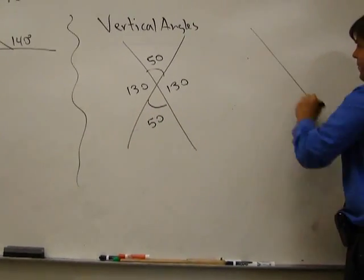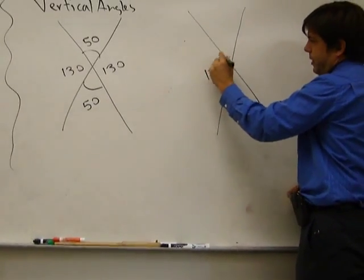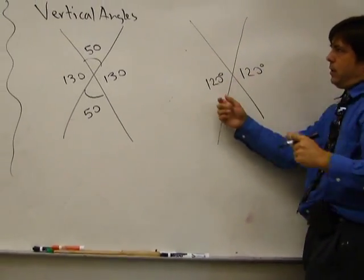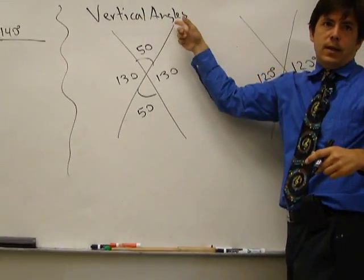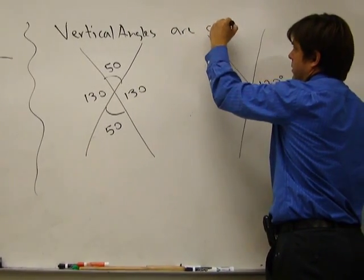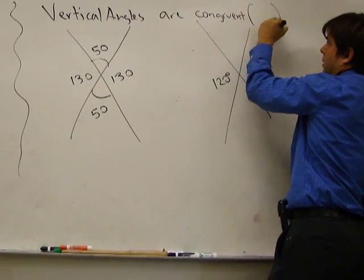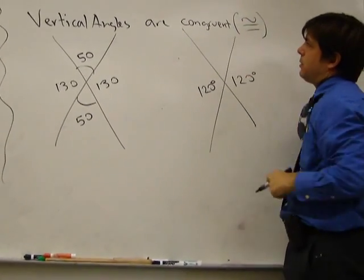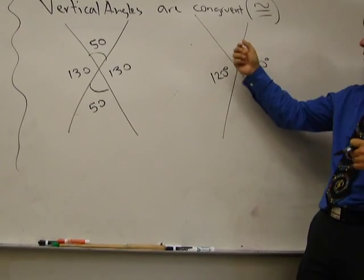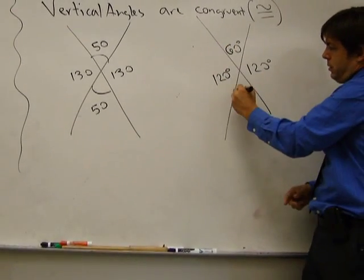Let's do another example. I'm going to give you just this one. It's 120. What do you think this one will be? 120. Because they are vertical angles. And vertical angles are congruent. Congruent just means they have the same measure. Here's the symbol for congruent. So this angle and this angle have to be congruent. And what do you think this one will be? 60. And this one? 60.